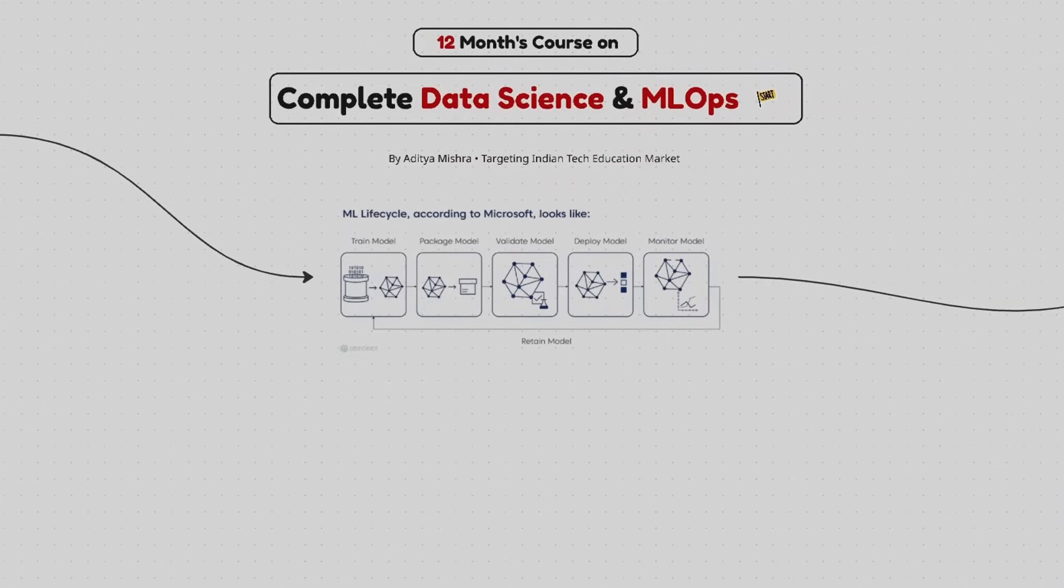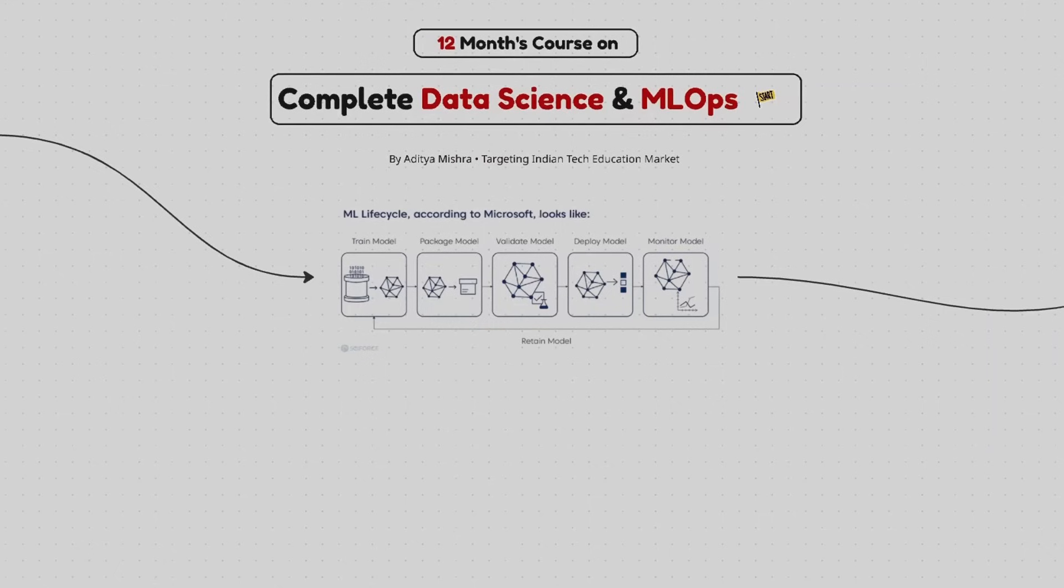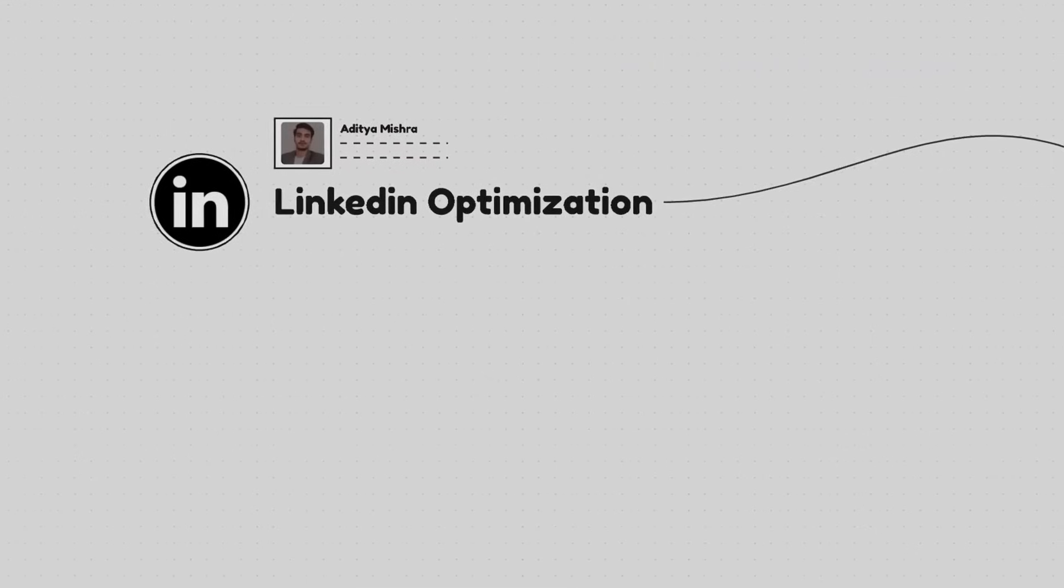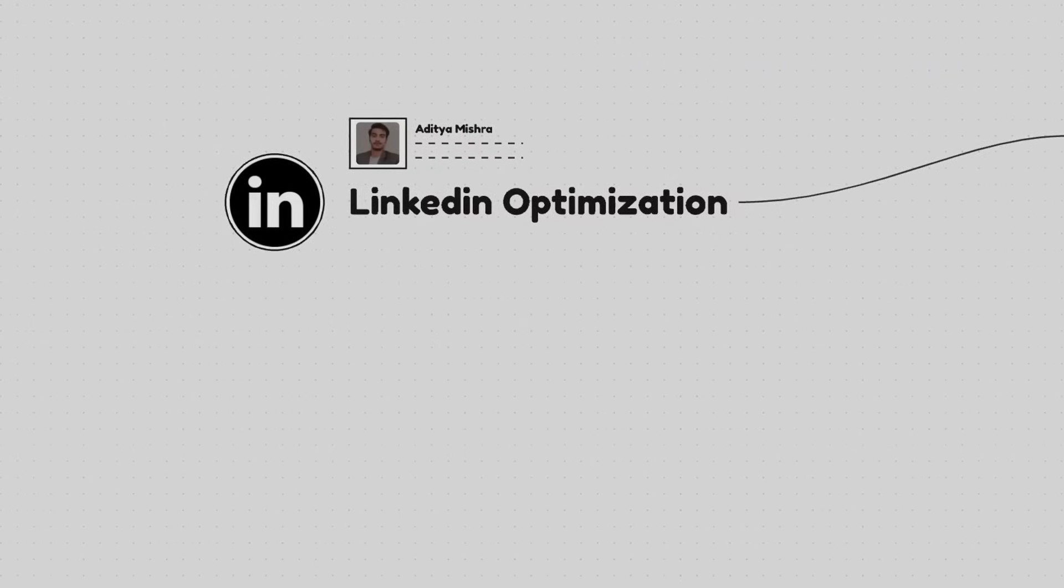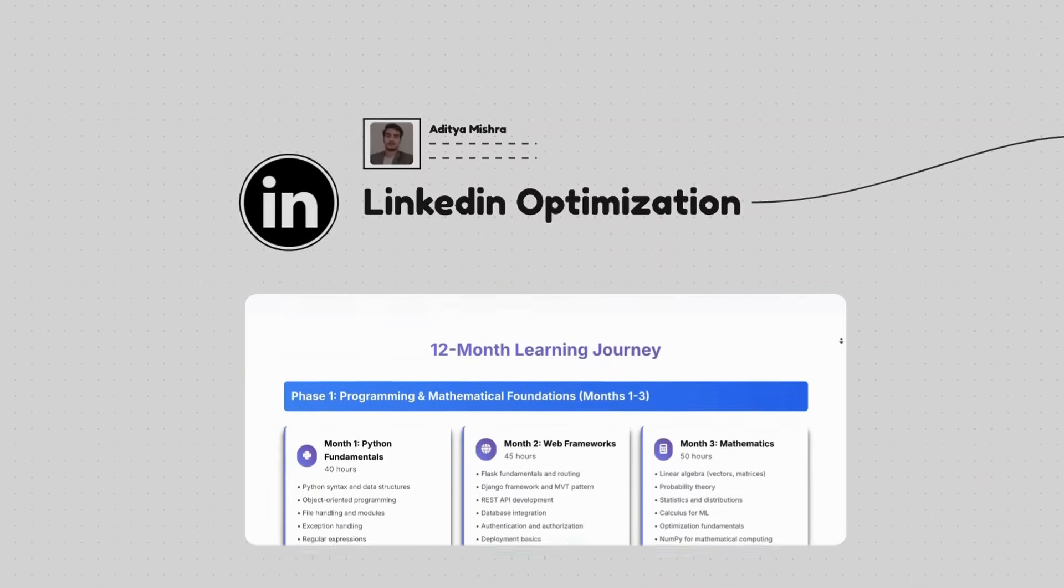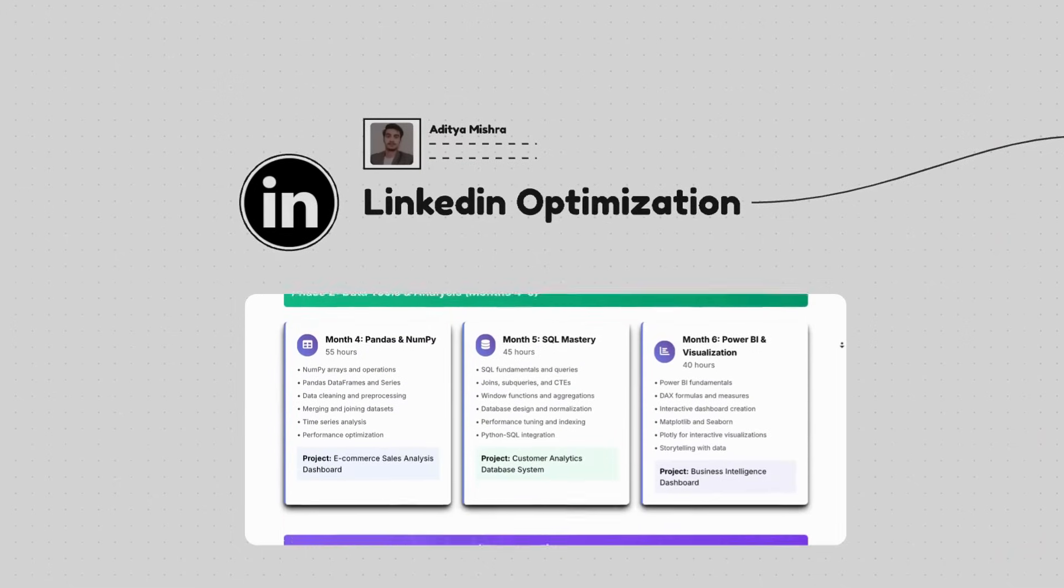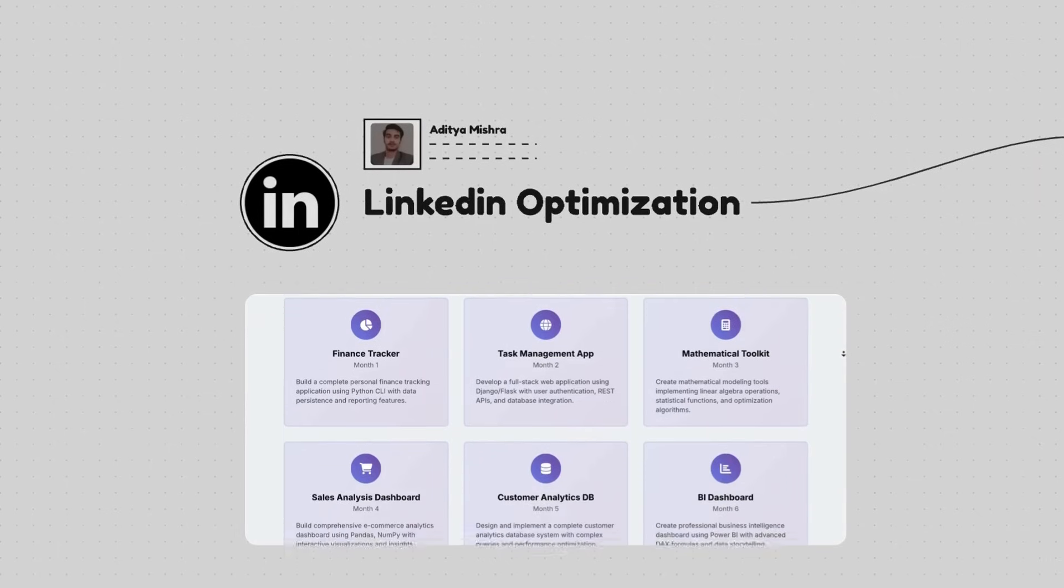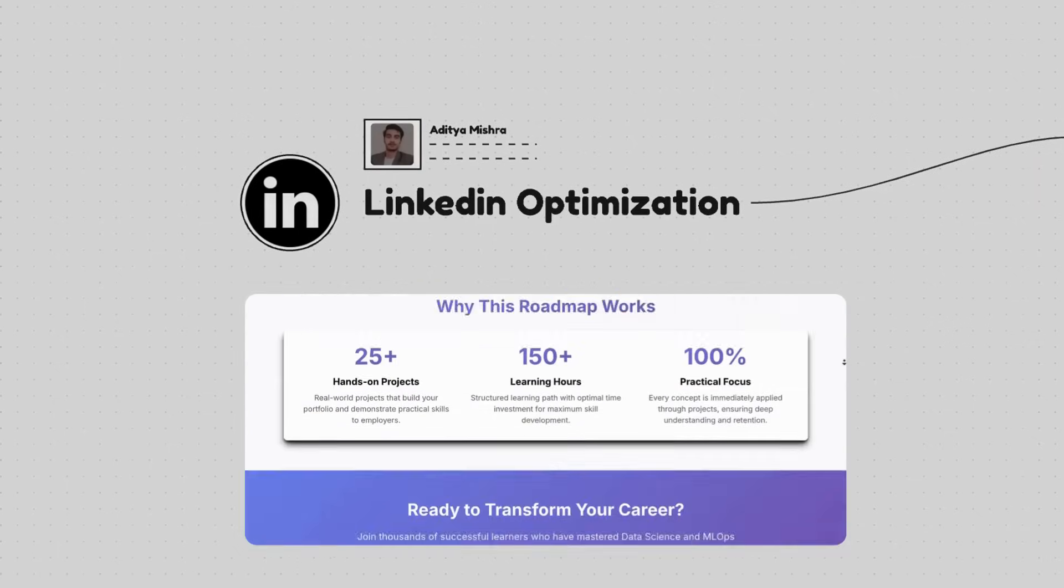Let me share some of the current market statistics with you. As we already seen, data scientists are earning a lot around 8 to 15 LPA while machine learning operations engineers are earning 12 to 20 LPA. But here's the problem. Most students don't know exactly what to learn and how to learn it systematically. That's why I've designed this complete 12-month structured curriculum that will take you from Python basics to advanced programming, data analysis to machine learning mastery, and simple models to production-ready machine learning operations systems. We have four comprehensive phases and each phase includes practical projects. And by the end, you will be completely industry ready and confident enough to crack any interview of any level.